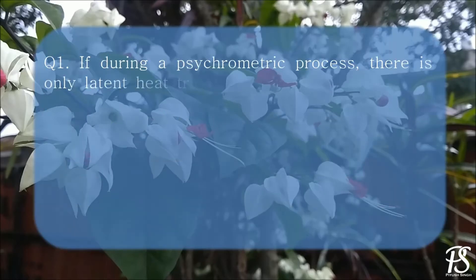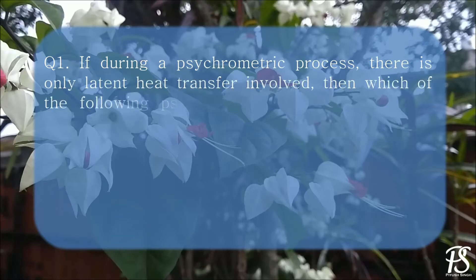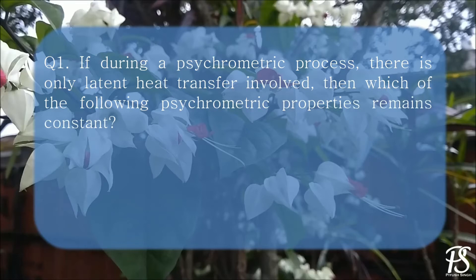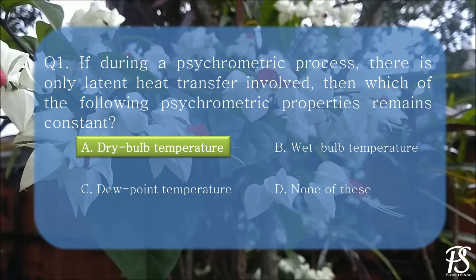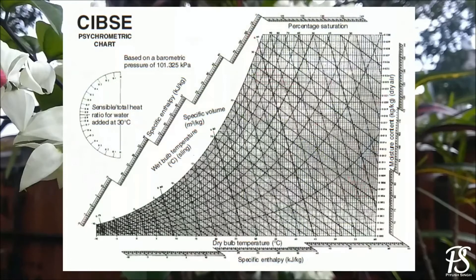Question 1: If during a psychrometric process there is only latent heat transfer involved, then which of the following psychrometric properties remains constant? A. Dry bulb temperature, B. Wet bulb temperature, C. Dew point temperature, or D. None of these. The answer to this question is A, dry bulb temperature. Now let us understand this with the help of a psychrometric chart.